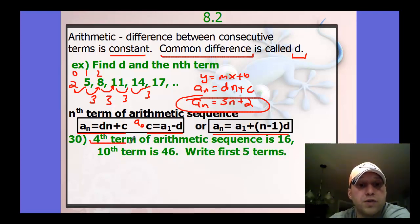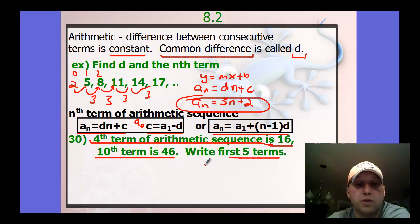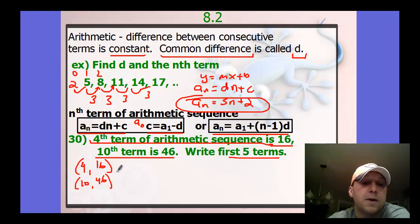Another example: the fourth term of an arithmetic sequence is given. They tell us it is 16, and the 10th term is 46. So write the first five terms. These are really two terms, the fourth term is 16, and the 10th term is 46. So if you recall your linear equation knowledge, I could find the equation between these two points.